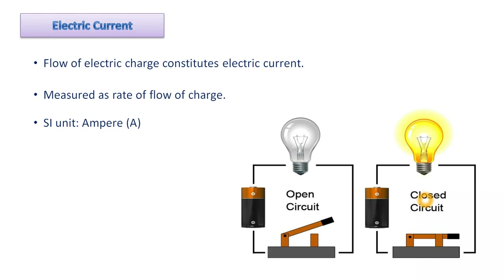This entire path is termed the electric circuit. When we talk about current, it's about the electric charges which move through this external circuit. The flow of charge constitutes electric current, and it is measured in amperes.